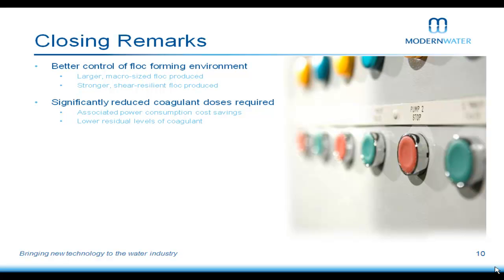Because of the way Agwacure is set up, we require significantly reduced coagulant doses compared to conventional chemical dosing. We also have lower residual coagulant left in suspension in the treated solution. Due to the inbuilt cathodic protection systems in all our chambers, we also avoid passivation issues that normally affect conventional EC — such as unwanted rusting of the electrodes.